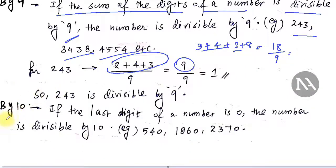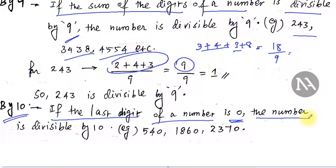For divisibility by 10: if the last digit of the number ends with 0, then the number is divisible by 10. For example, 540 and 1860 both end with 0, so they are divisible by 10. That is all about Part 1 of the Number System. Hope you enjoyed this video — we will meet in Part 2. Thank you very much.